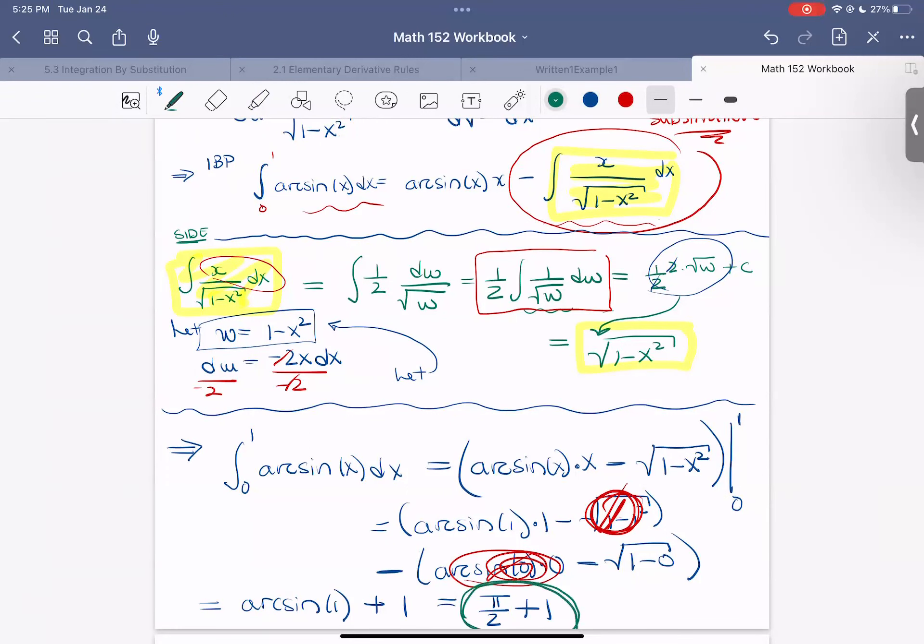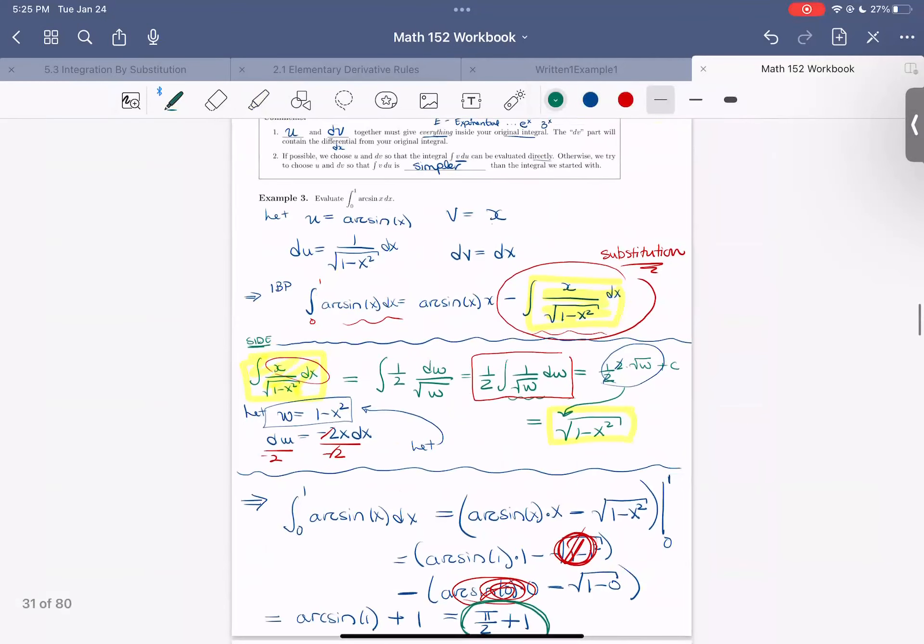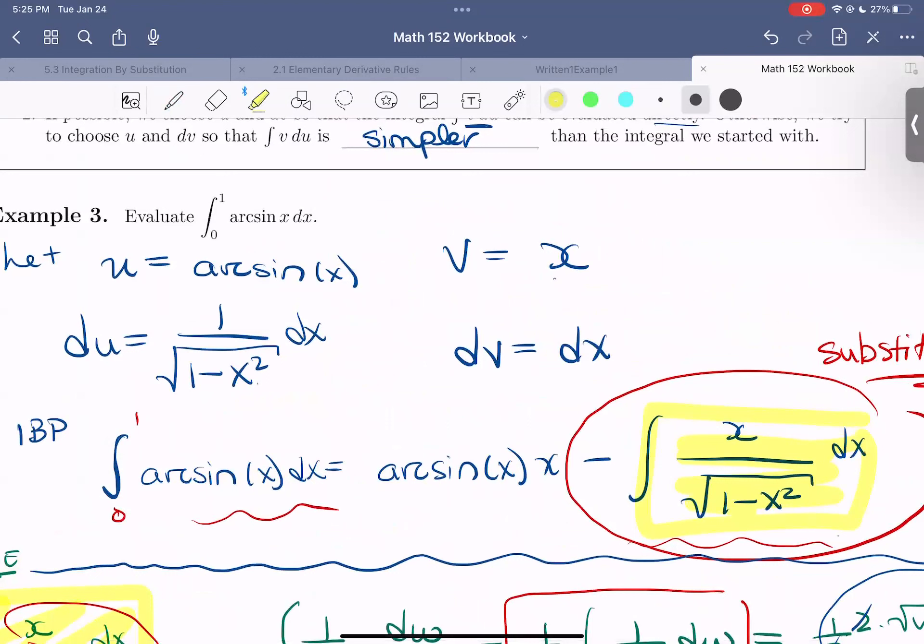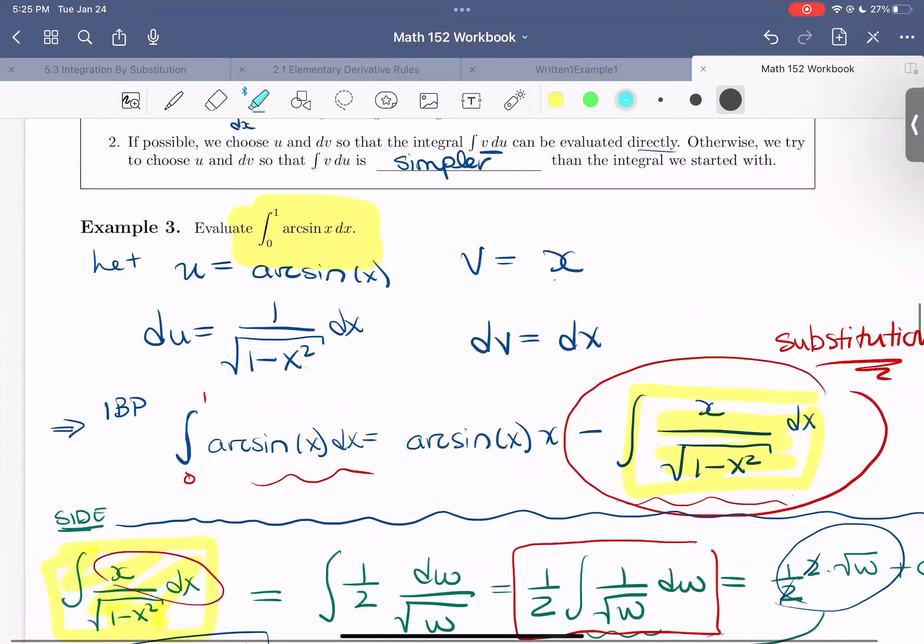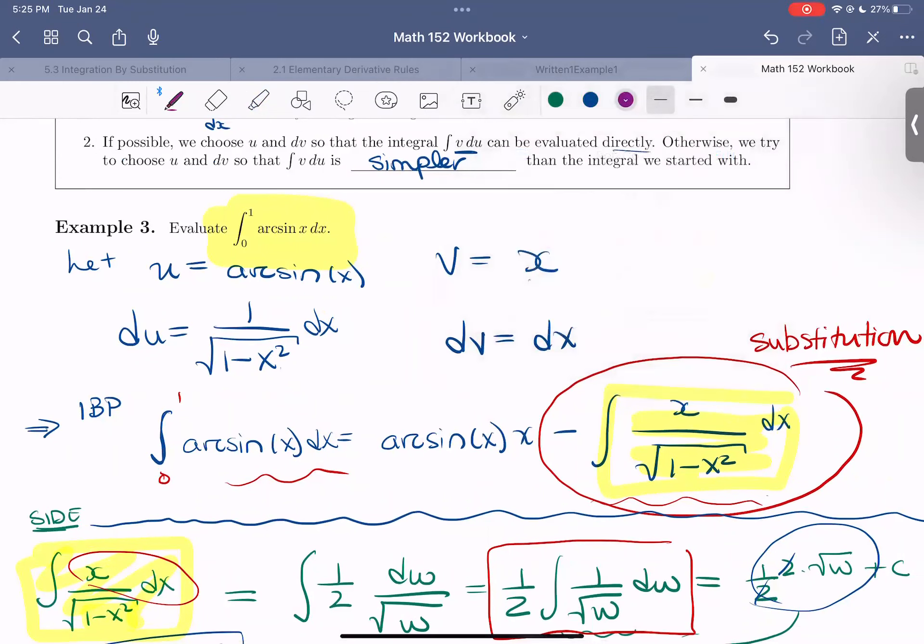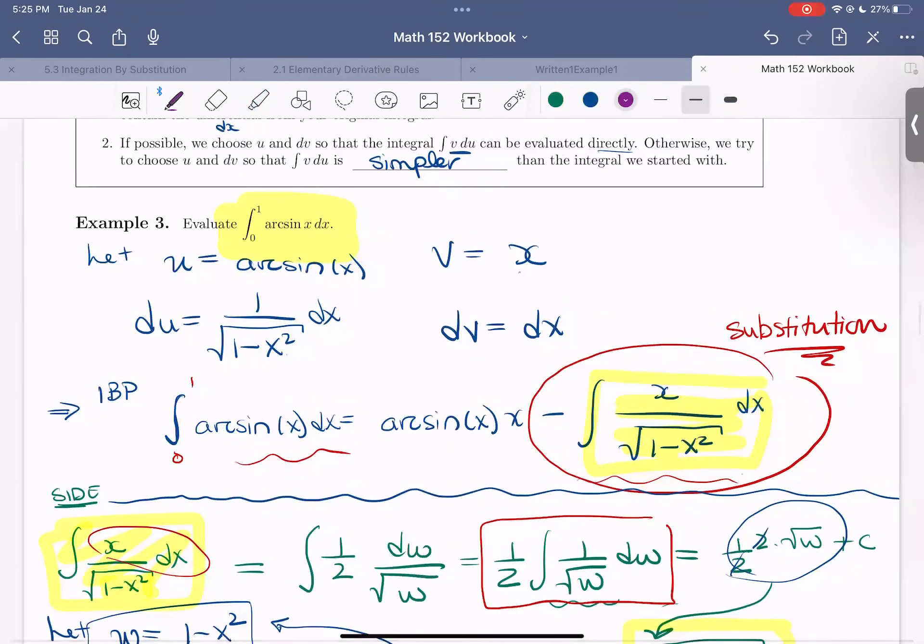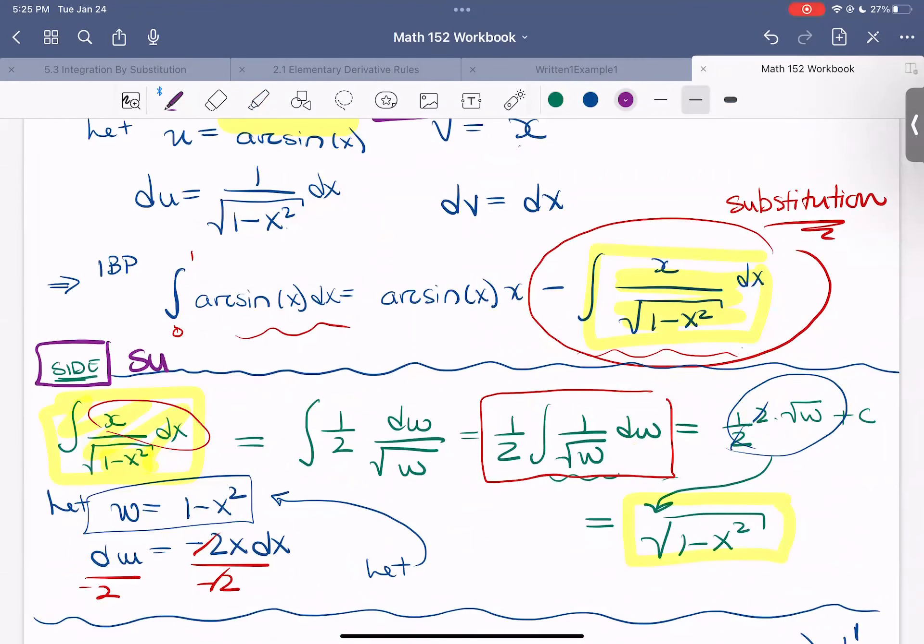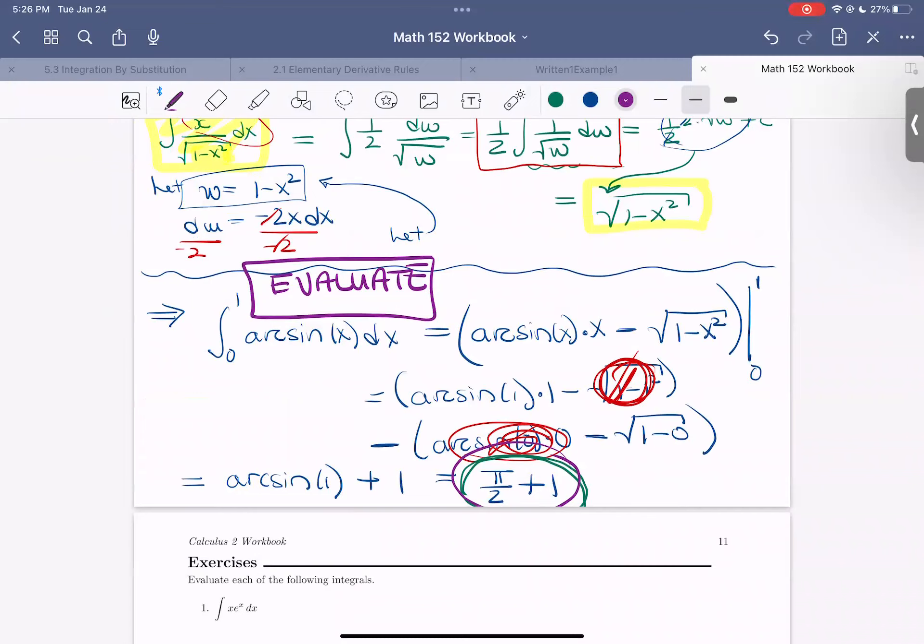Oh, nice job. All right. So just to kind of recap what we've done here, we've computed this definite integral of arc sine of x by first using integration by parts. I mean, I use a color here, congratulatory color purple. So first using integration by parts, then using a side of substitution, and then evaluating to get our final number. Awesome. Nice work on this. Everyone feel free to rewatch this video, take a break, work on those exercises and great job. Great job.